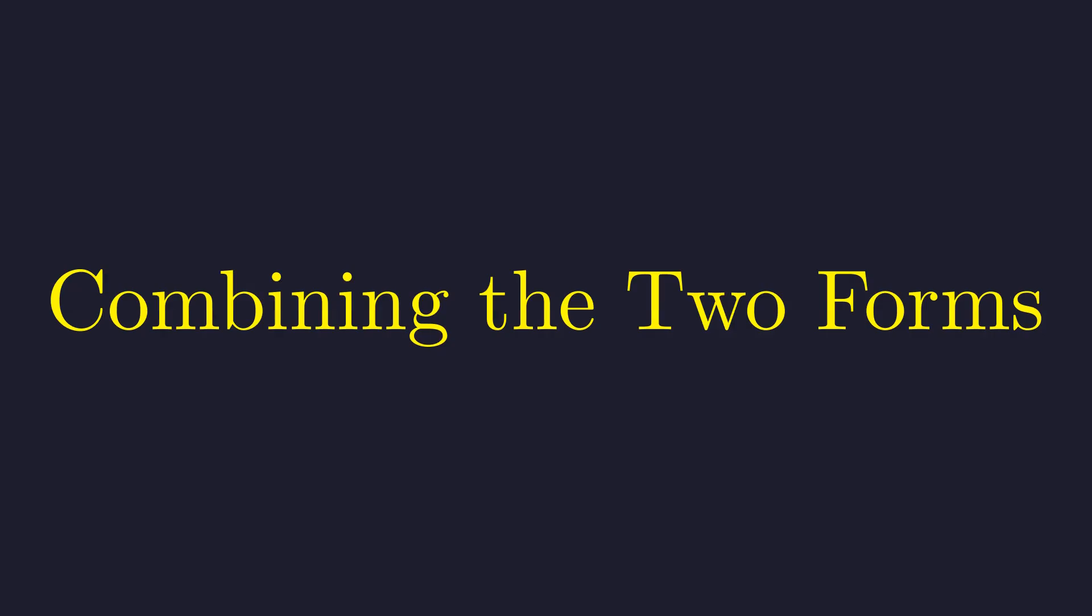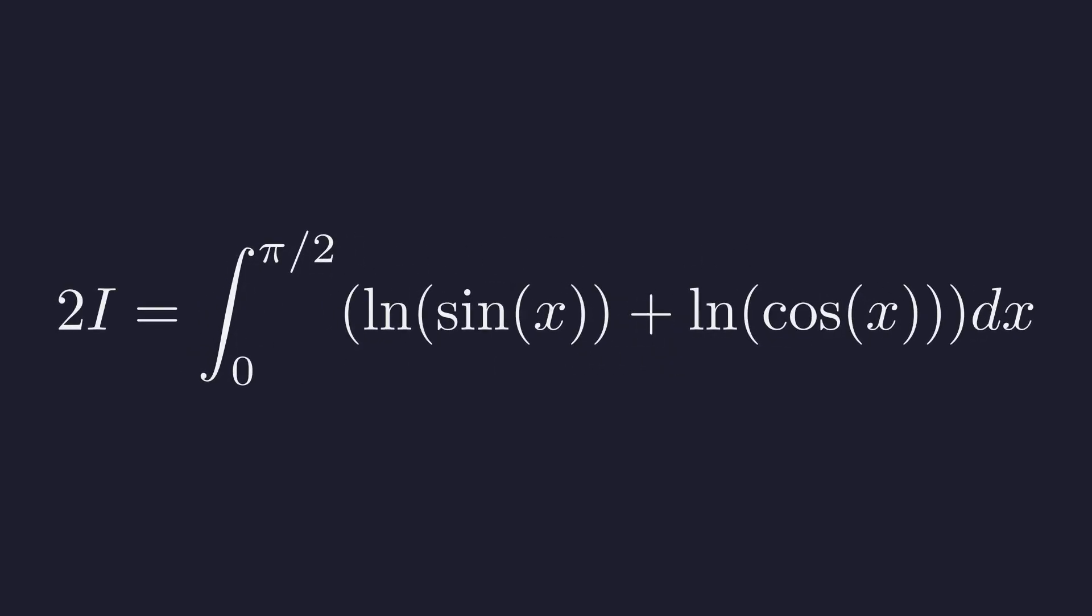Since we have two different expressions for the same value i, what happens if we add them together? Adding i to itself, we get 2i equals the sum of our two integrals. Since the limits of integration are the same, we can combine them into a single integral.